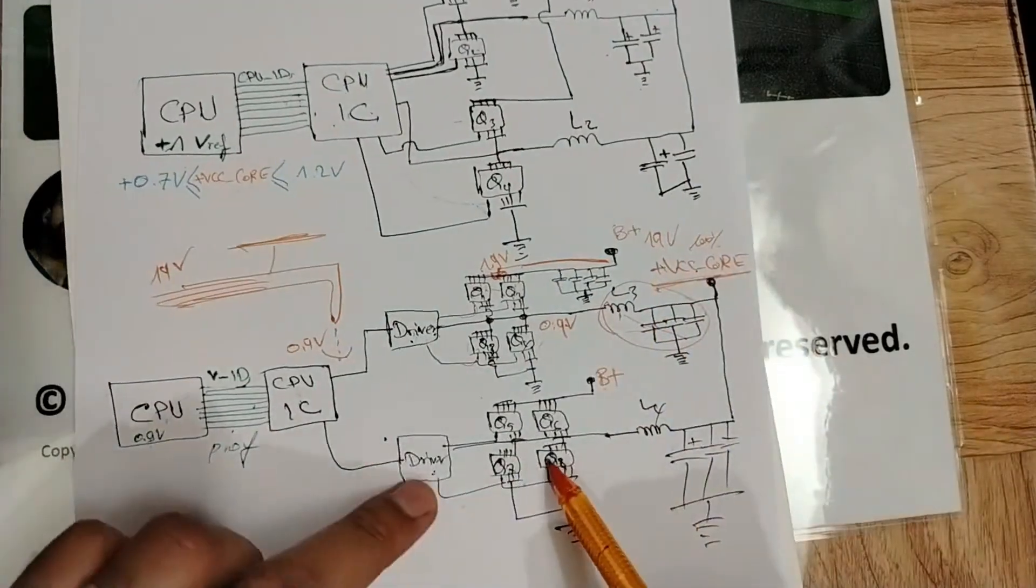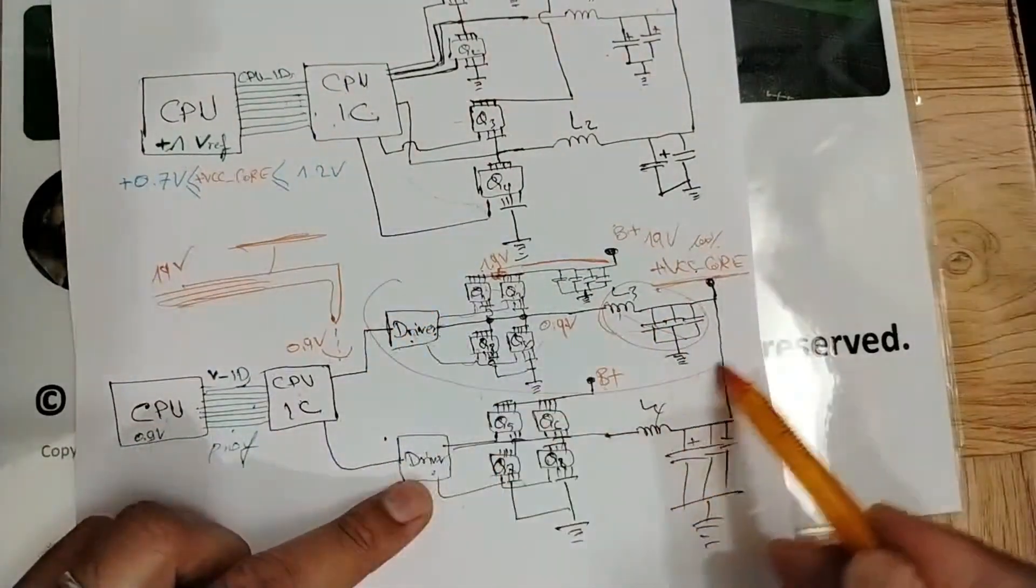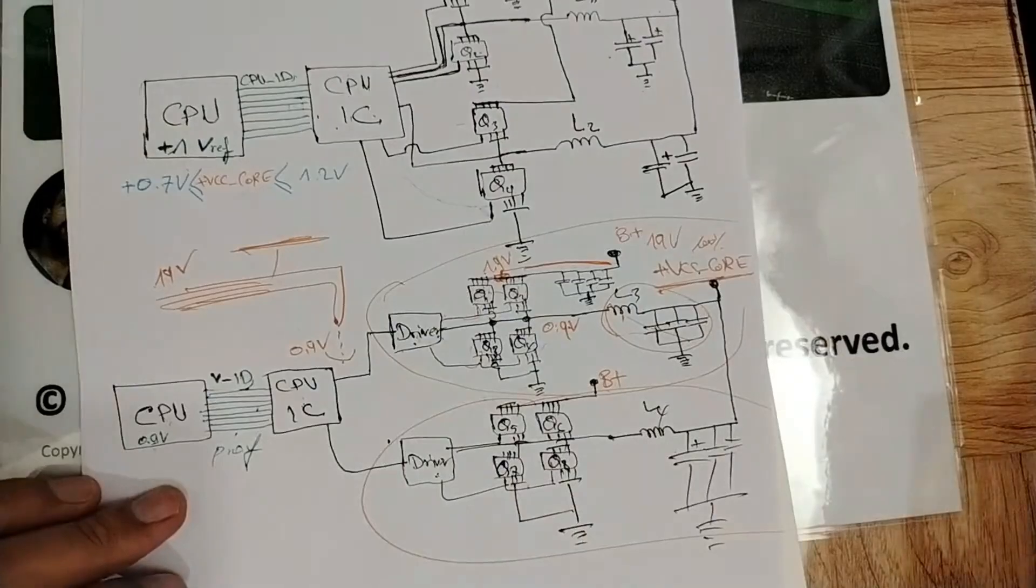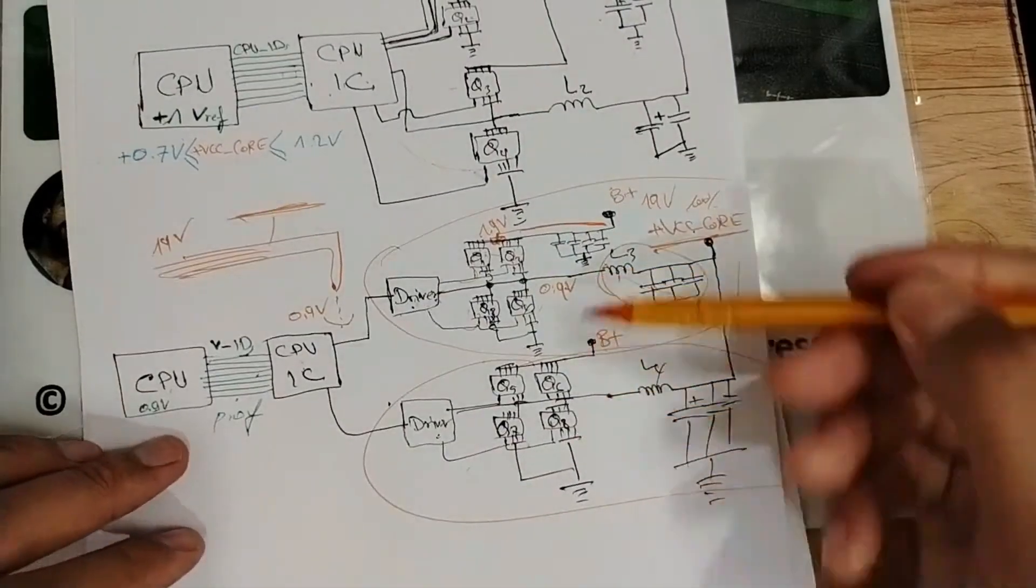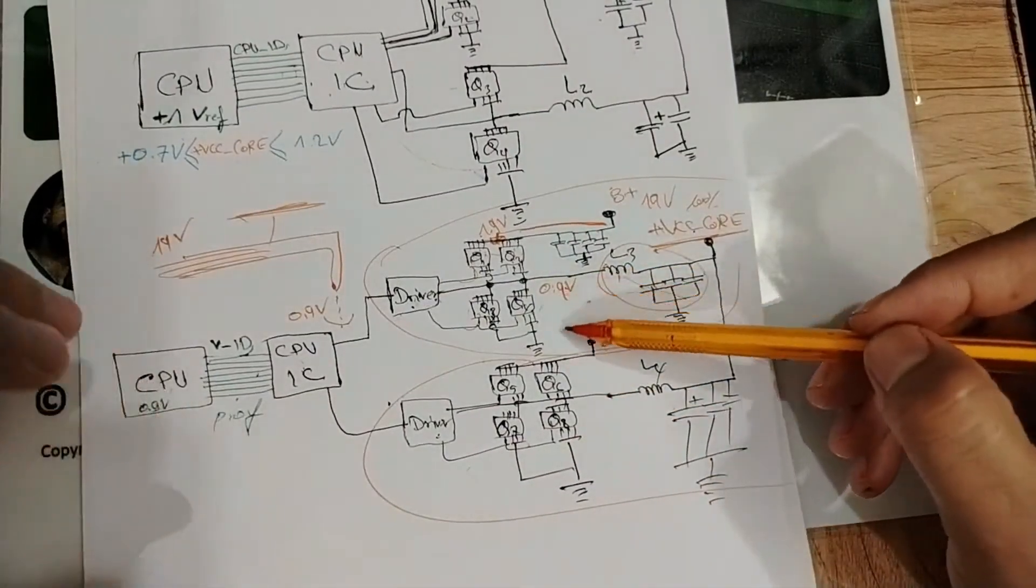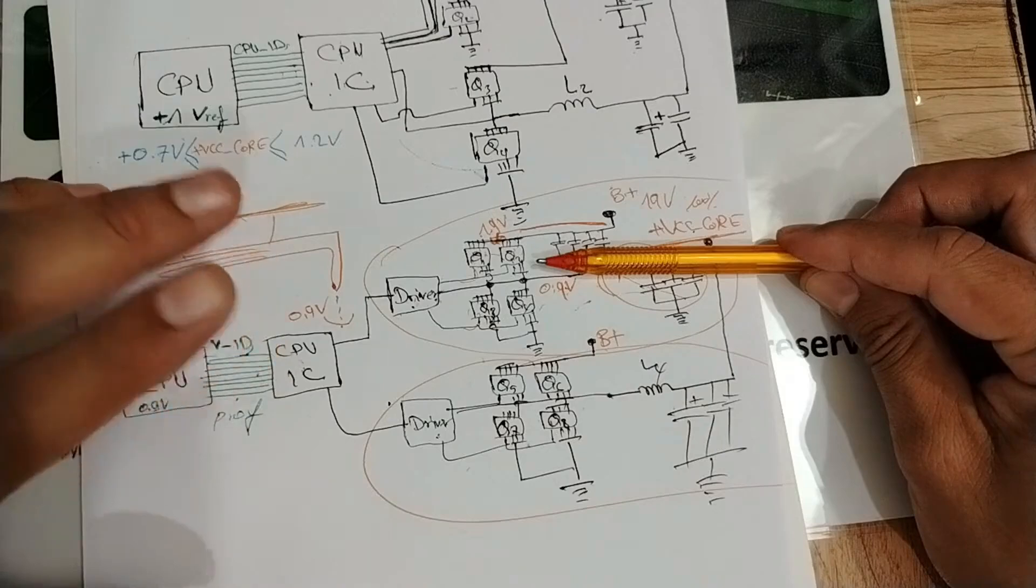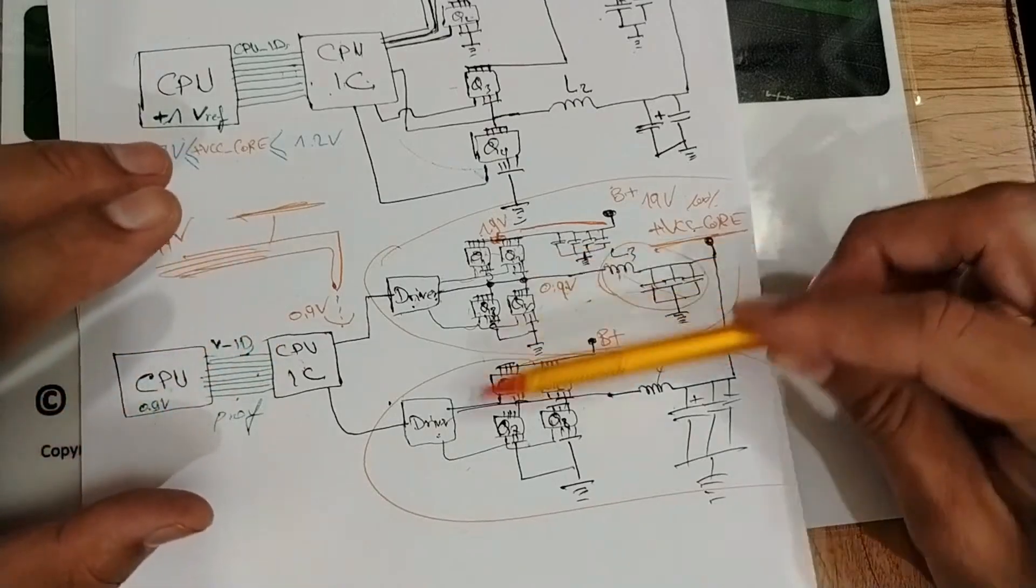And then we will get VCC core. We have another channel - the first channel here, and here we have the second channel. Why? Basically we have more channels just in order - this channel works for example for three milliseconds, this one works three milliseconds.